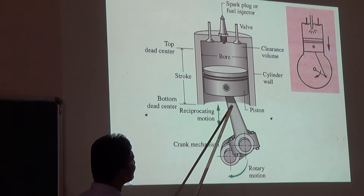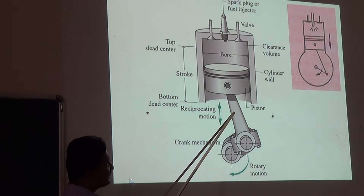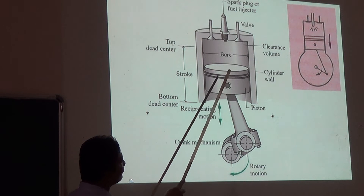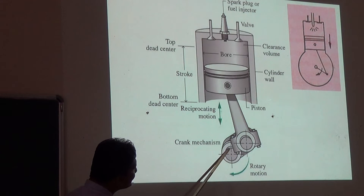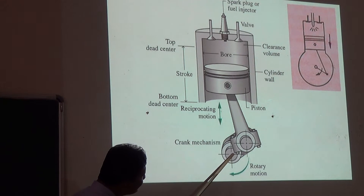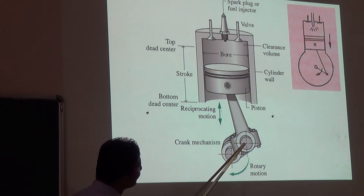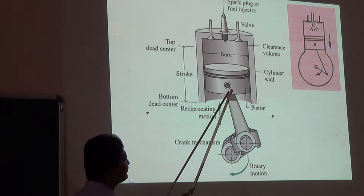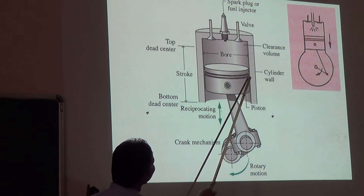The piston is connected to one more part called the connecting rod. This connecting rod and piston are connected to each other by using a gudgeon pin — this circular part you are observing is the gudgeon pin. Now the connecting rod is connected to the crankshaft through a crank. By using this crank we are converting rotary motion into reciprocating motion, or vice versa — reciprocating motion into rotary motion.